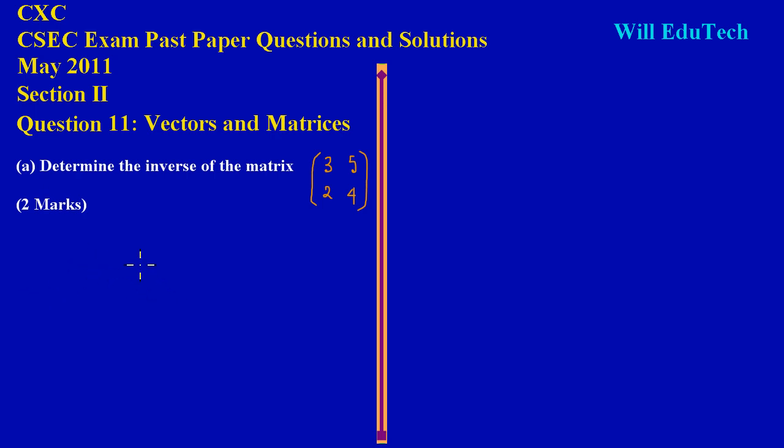Welcome back guys, in this video we'll be looking at question 11 and this question usually falls under the general topic on the syllabus: vectors and matrices. Let's quickly get into it. Question 11 part A, they're asking us to determine the inverse of the matrix [3 5; 2 4].